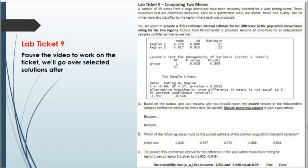The last thing to work on for today's lab is the lab ticket. Go ahead and pause the video to work on it, and we'll go over some selected solutions after. The prompt: a sample of 29 wines from a large distributor has been randomly selected from a wine tasting event. Three responses are measured — aroma, flavor, and quality — and the 29 wines were classified by the region where each was produced. We are asked to provide a 95% confidence interval estimate for the difference in the population mean flavor rating for the two regions, using the provided output including means, standard deviations, sample sizes, Levene's test, and the actual t-test.